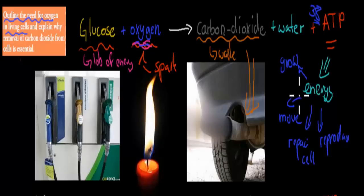And we use that energy to grow, to move, to repair cells, and to reproduce. So that's why we need oxygen. So all I need for oxygen in the living cells is important for cellular respiration, which is this equation here. And in cellular respiration, we produce ATP, which we can then use to grow, move, repair cells, and reproduce. So basically to survive, to be alive.